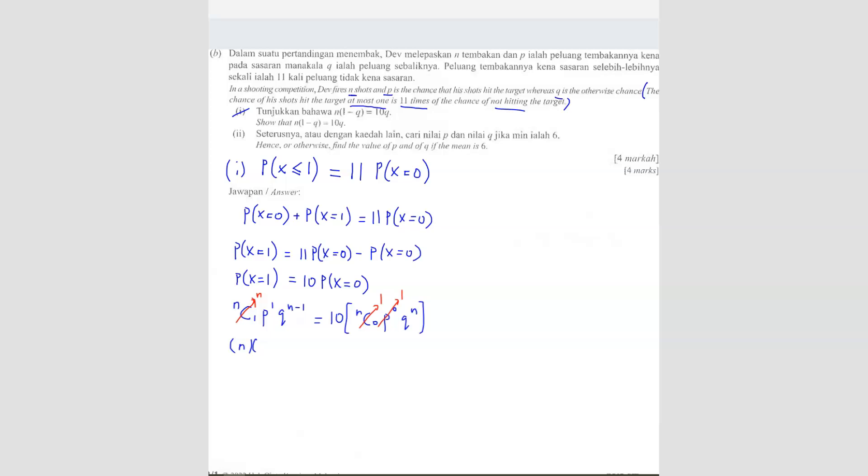So how do you remove the P? We know that P plus Q equals to 1, right? Probability of success plus probability of failure equals to 1. So P is equals to 1 minus Q. So you can substitute that into your equation.